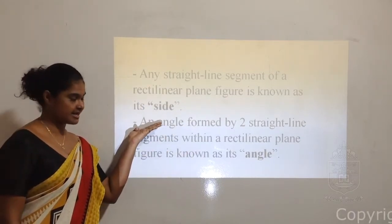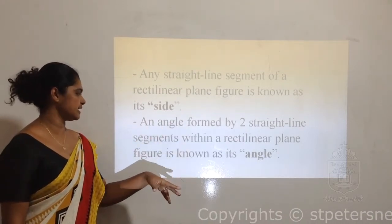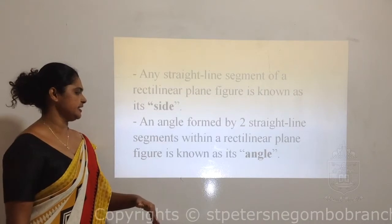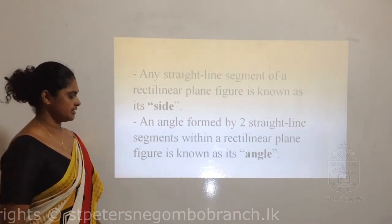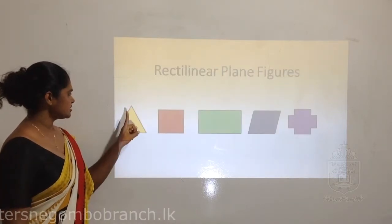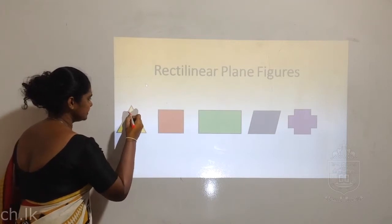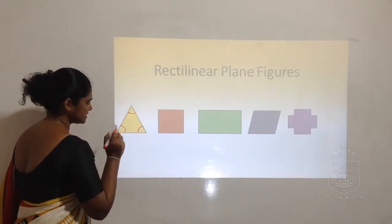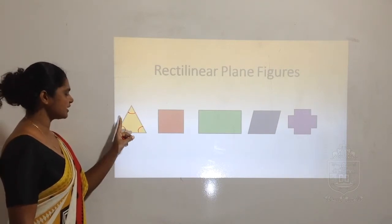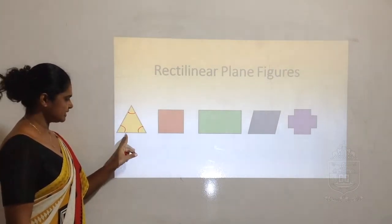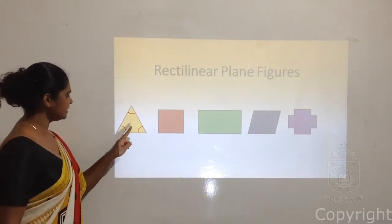There are sides and angles. An angle formed by two straight line segments within a rectilinear plane figure is known as its angle. This means the interior - the inside distance between two sides. The measurement that is inside the figure is known as its angle. The triangle has three angles.